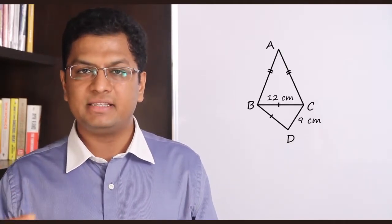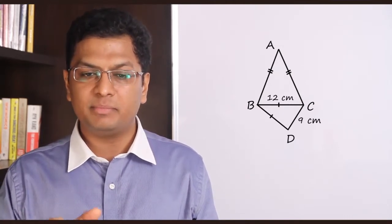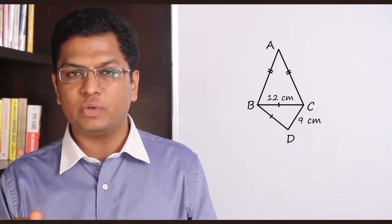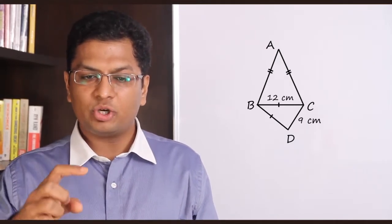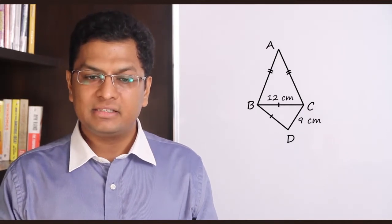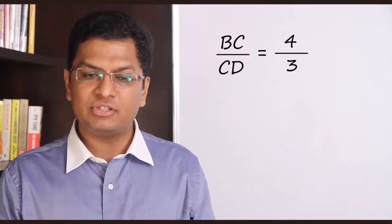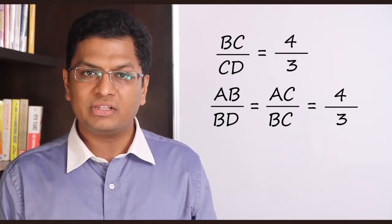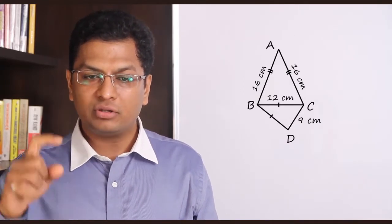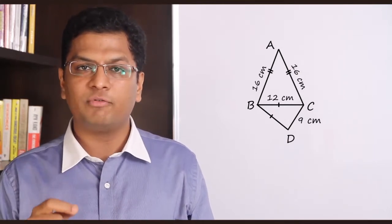Problem: A common side of two similar isosceles triangles is 12 cm. The base of the smaller triangle is 9 cm. Find the perimeter of the bigger triangle. Triangle ABC has AB = AC, and triangle BCD has BC = BD = 12 cm, CD = 9 cm. The ratio BC/CD = 12/9 = 4/3. So AB/BD = 4/3, giving AB = AC = 16 cm and BC = 12 cm. The perimeter is 44 cm.